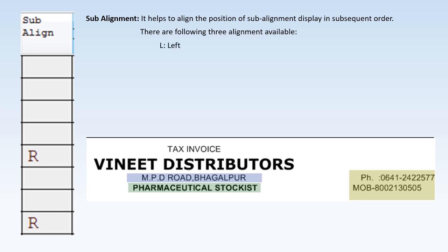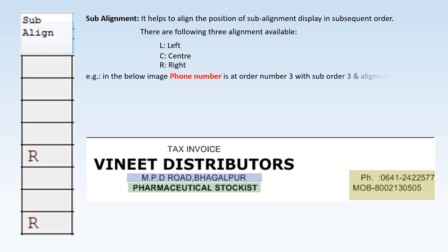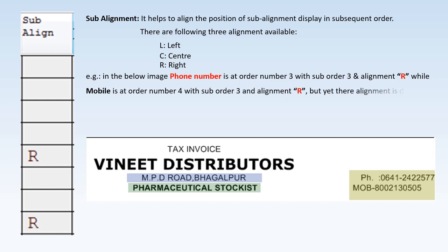For example, phone number is at order number three with suborder three and alignment R, while mobile is at order number four with suborder three and alignment R — yet their display alignment is different. This is because the sub-alignment for phone number is R and for mobile is L.